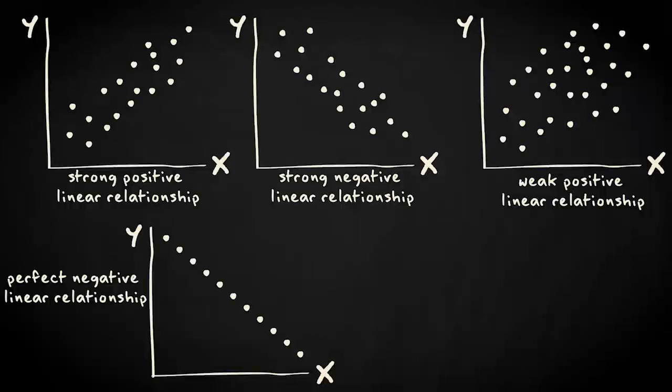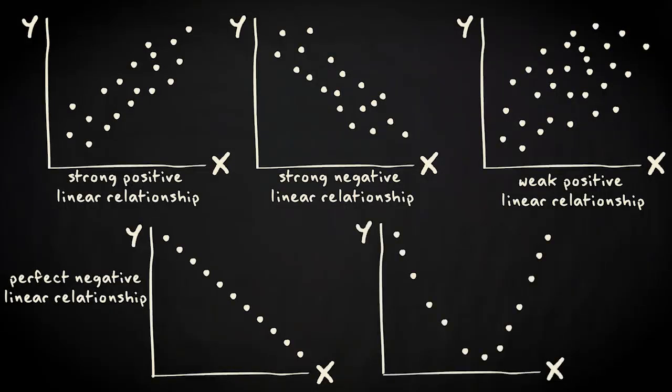But the correlation between two variables need not be linear. In this graph, we also see a relationship between the variables x and y. However, the line that best represents the relationship between the two variables is not straight. Instead, it is a u-shaped line. We call this a curvilinear relationship.